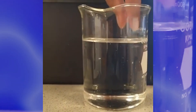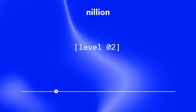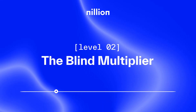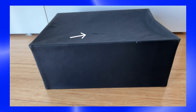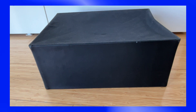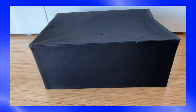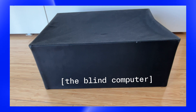But let's get a little bit more advanced and complex in our analogies. That brings us to Level 2: the blind multiplier. In this case, what we have is a box with a slot where you can insert coins. This box is pitch dark — you don't see anything — so that's the blind computer, and this blind computer is going to do multiplications.